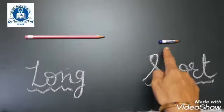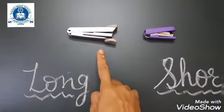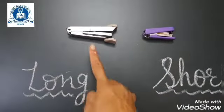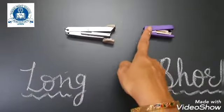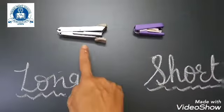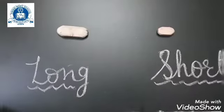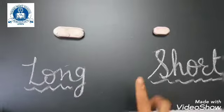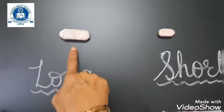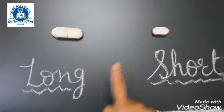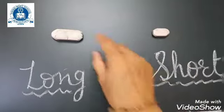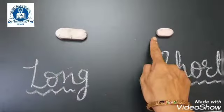Long, short. Staplers: the silver one is long and blue is short. Long, short. We have two erasers. This one is long and this one is short. Long, short.